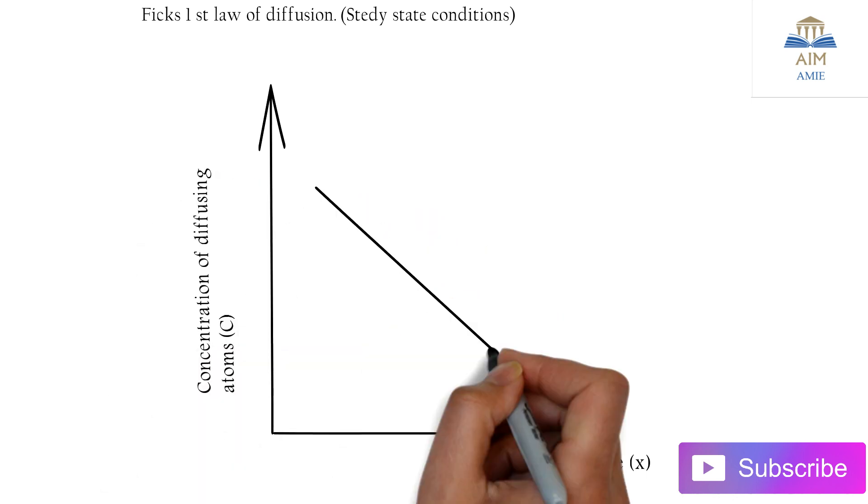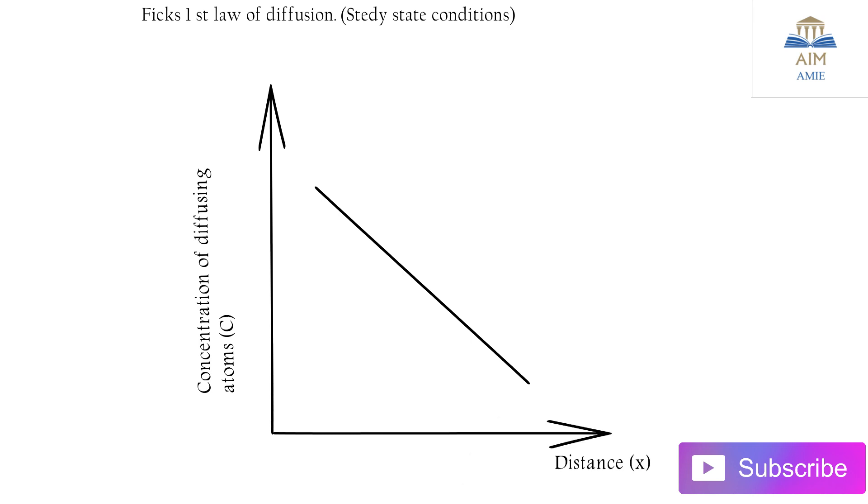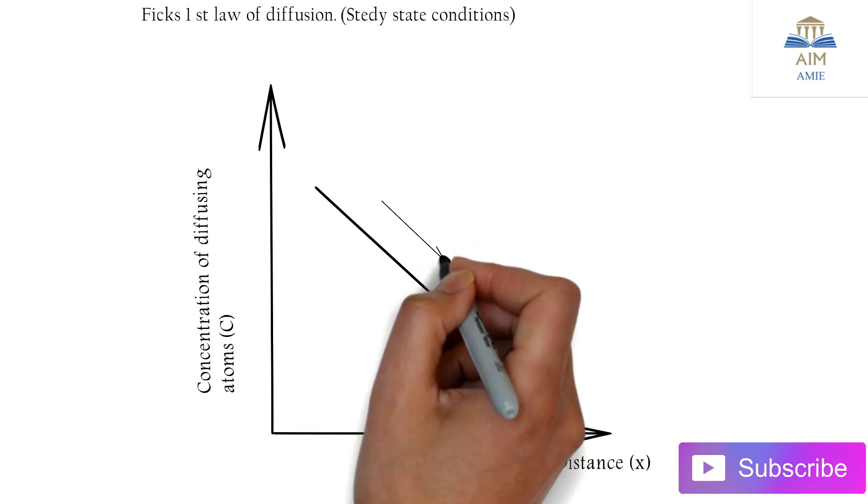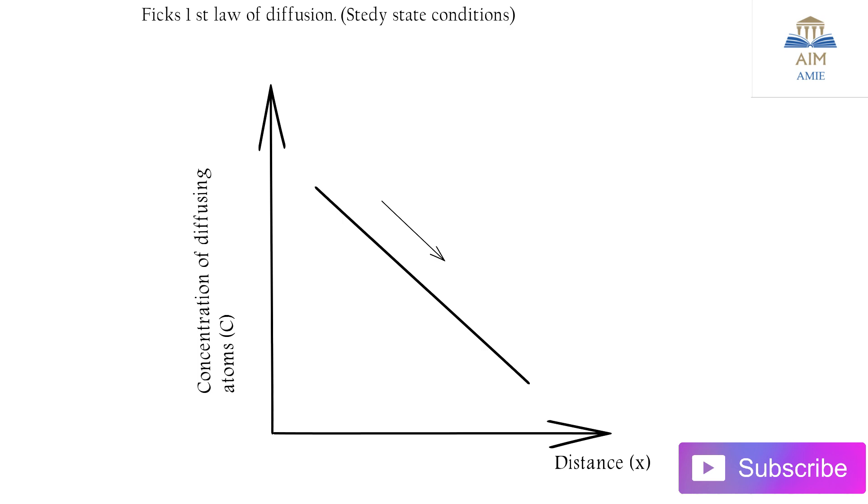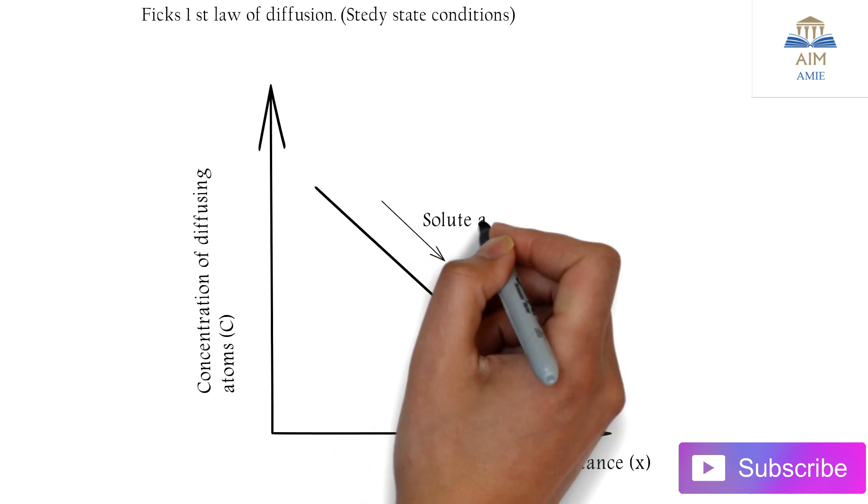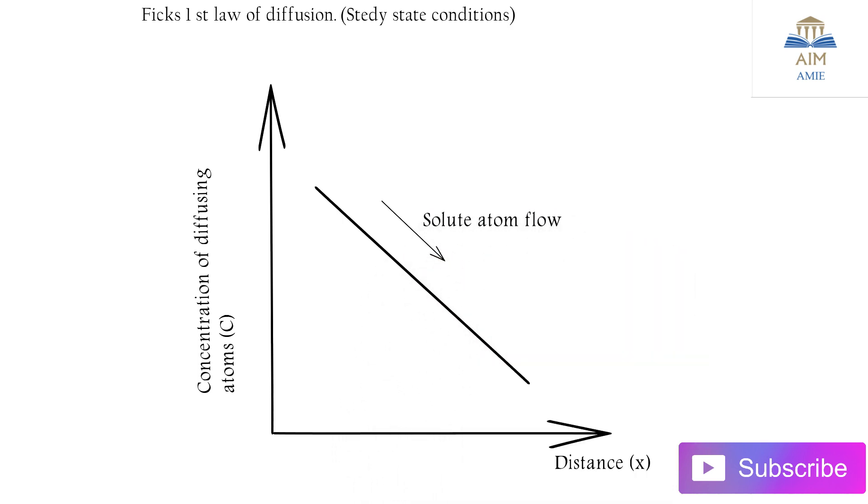Consider there is a flow of electrons in this particular line at distance X. That is, the solute atoms are flowing in the X direction.